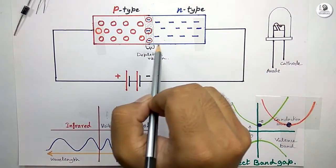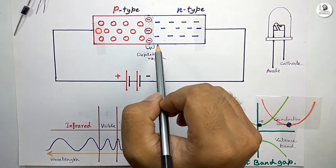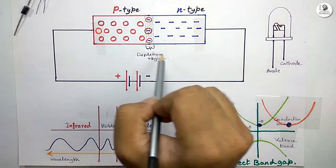In this schematic of the PN junction, you can see this is a P-type region and this is an N-type region. And at the middle, this is a depletion region.